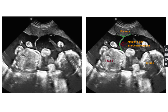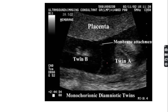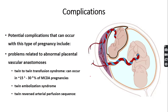In the second trimester, monochorionic diamniotic twin pregnancy shows a single placenta, a T-sign, and a thin inter-twin membrane with two fetuses.